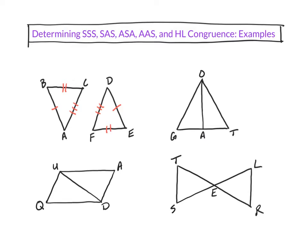Just so you know, you can see that AB is congruent to DE, BC is congruent to EF, and AC is congruent to DF. So therefore, these two triangles are congruent by Side-Side-Side.